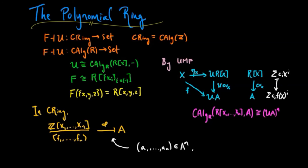In other words, it's the same as giving A1 to AN in A such that FI evaluated on this element is 0 for all I from 1 to M. So this type of situation is precisely what we want when analyzing diophantine equations.